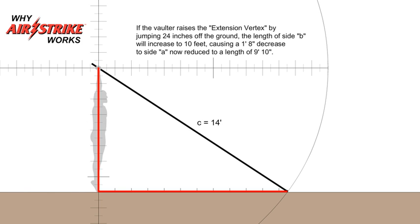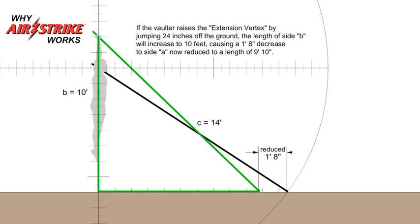If the vaulter raises the extension vertex by jumping 24 inches off the ground, the length of side b will increase to 10 feet, causing a 1 foot 8 inch decrease to side a, now reduced to a length of 9 feet 10 inches.